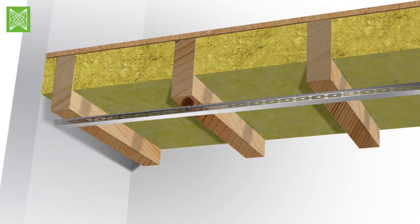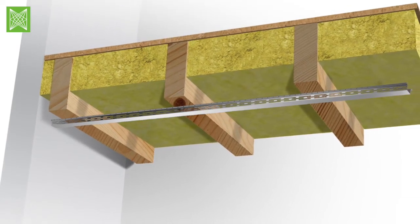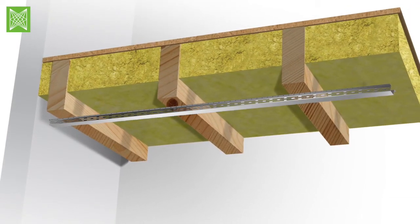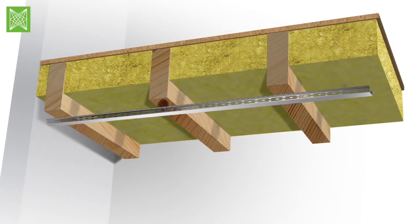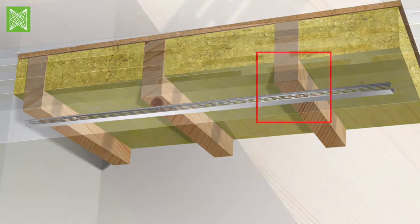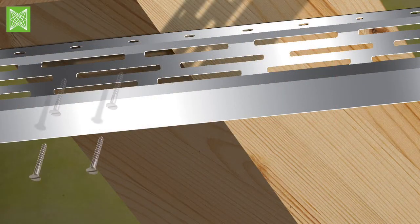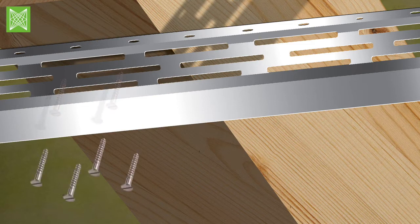Offer up the HUSH Bar Deep Resilient Bars to the underside of the joists. Ensure the resilient bars are fixed horizontally to the joists. Screw fix HUSH Bar Deep Resilient Bars into place using adequate timber screws through pre-drilled fixing points. Ensure to use four fixings per joist.